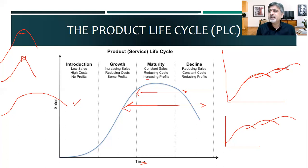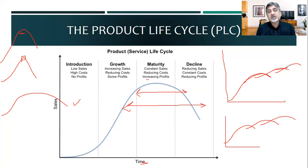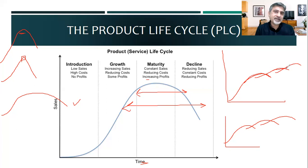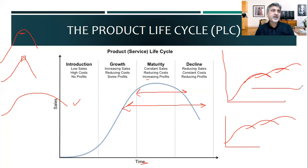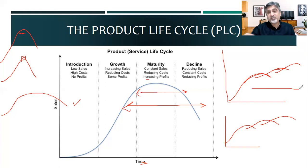You have seen this with detergents too — Arial, New Arial, Ultra Arial, Super Ultra New Arial. They are making minor modifications to give or extend the life of the product so that it does not go into decline. Arial is a long-life product, but iPhone is a short life cycle product, so this concept generally applies to short life cycle products. Minor modifications give the product a few more months to earn more profits.